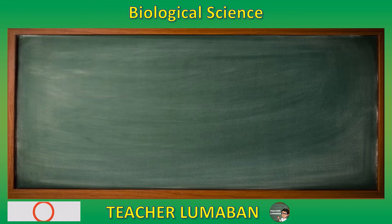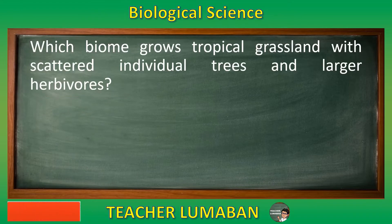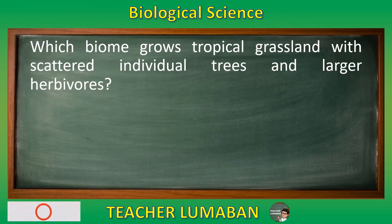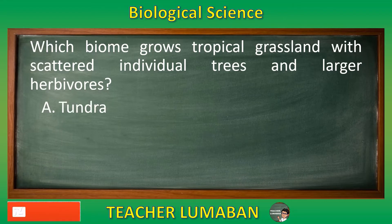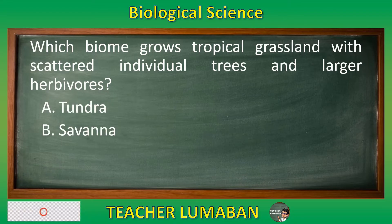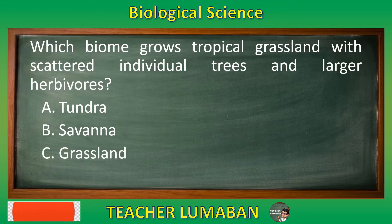Which biome grows tropical grassland with scattered individual trees and larger herbivores? Letter A: Tundra. Letter B: Savannah. Letter C: Grassland. Letter D: Rainforest.